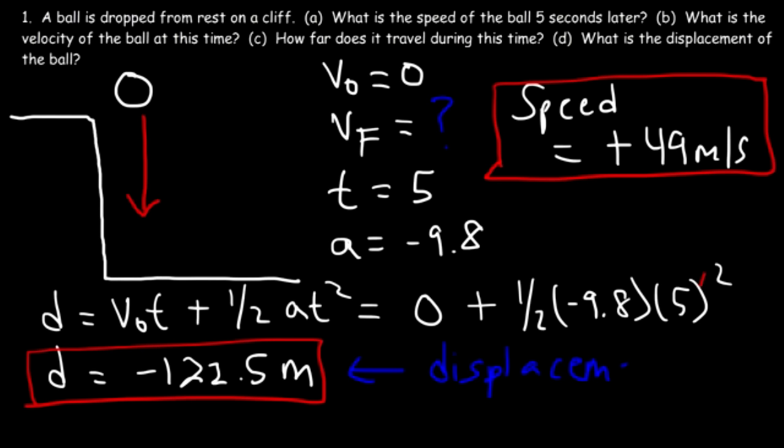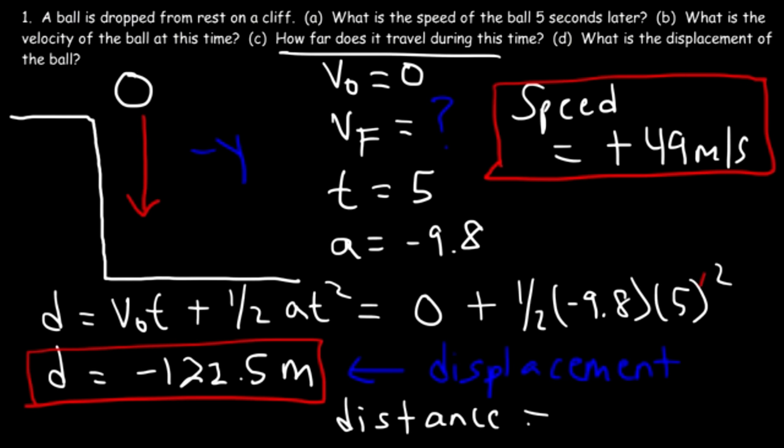That answer - negative 122.5 meters - is the displacement, not the distance traveled. Displacement is a vector like velocity; it can be negative or positive. Because the object moves in a negative y direction, displacement is negative. But part C asks for distance traveled, which is simply positive 122.5 meters. Whenever an object moves in one direction without changing direction, distance and displacement have the same numerical value - just the signs may differ.